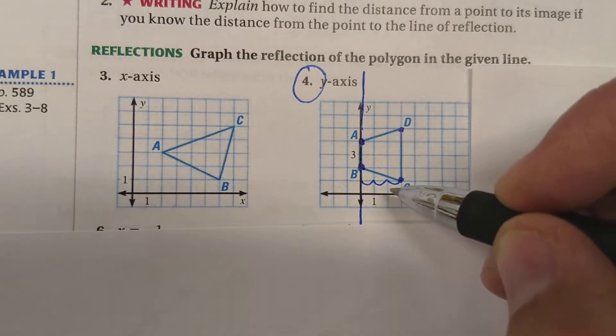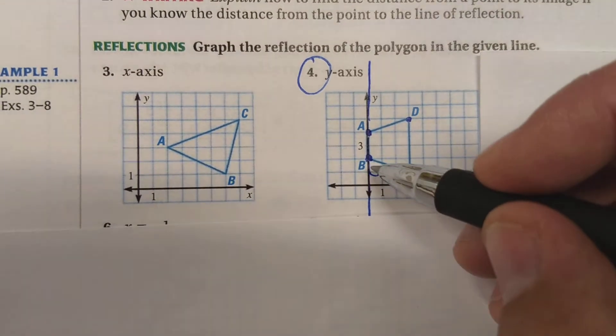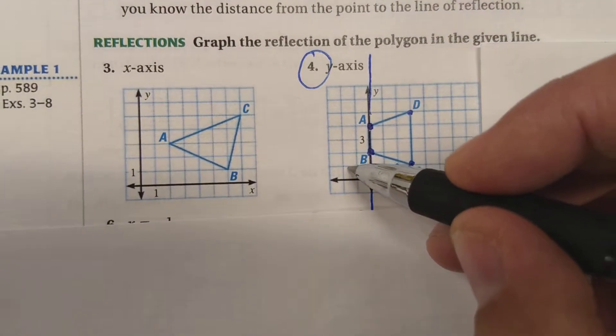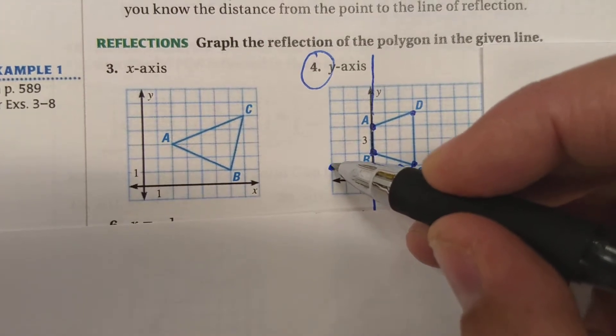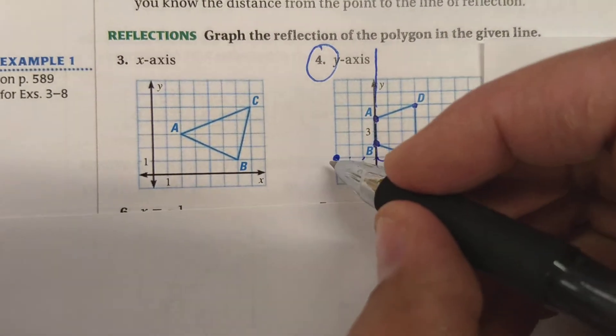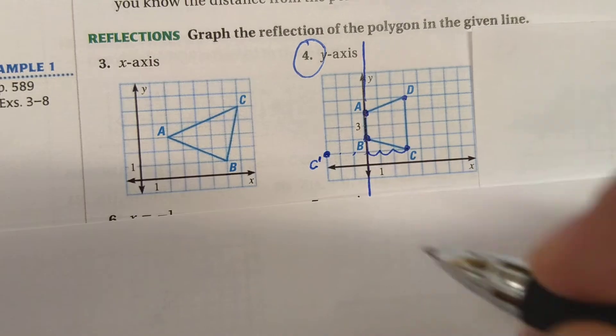And so we can go one, two, three units straight out in the other direction. And that's where C prime is going to be.